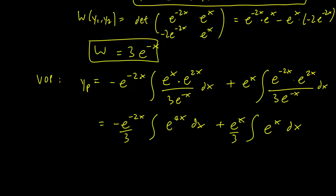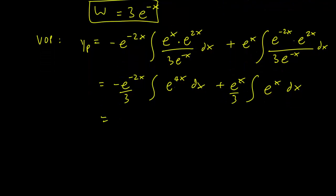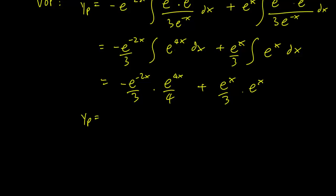And this is fairly straightforward to integrate. We then have -e^(-2x) / 3 times e^(4x) / 4 plus e^x / 3 times e^x. So our particular solution is just going to be e^(2x) / 12, sorry, -e^(2x) / 12 + e^(2x) / 3, which is going to be e^(2x) / 4.